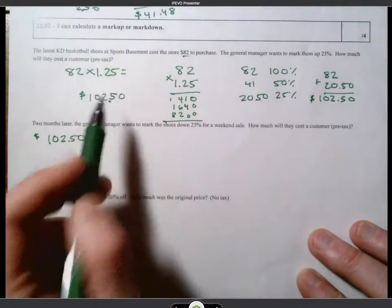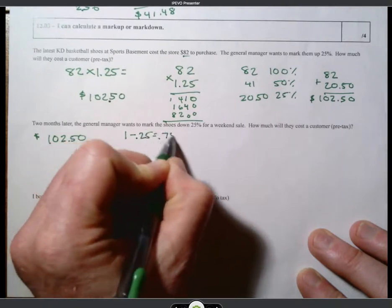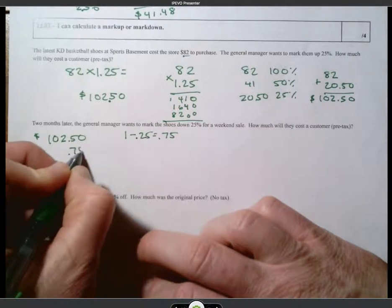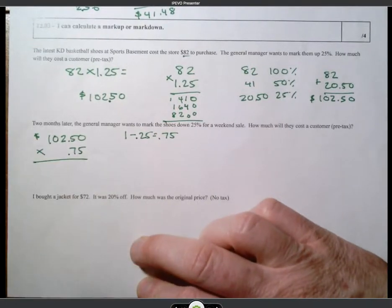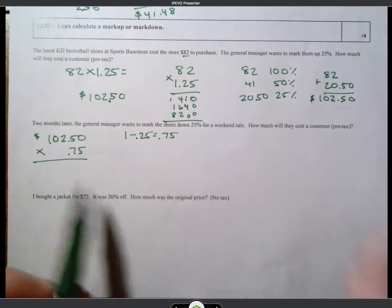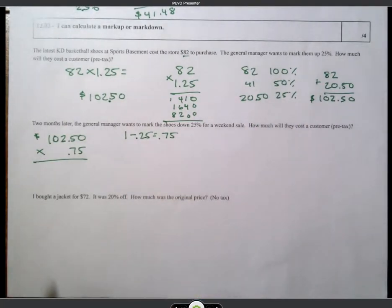So if we want to use this method, we'd take 1 and subtract 0.25, which is 75%. So I want to know what 75% of this will be. And that's going to be the new price. Or, if we like the other way I did it, I'll show you the mental math way. Okay?